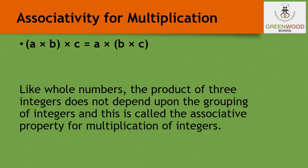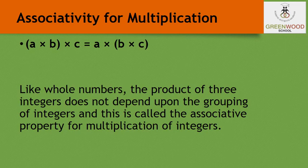Now let us learn associativity for multiplication. Associativity states that (a times b) times c equals a times (b times c). Like with whole numbers, the product of three integers does not depend on the grouping. Whether we multiply a and b first then multiply by c, or multiply b and c first then multiply by a, the answer is the same.